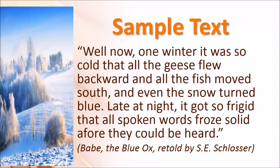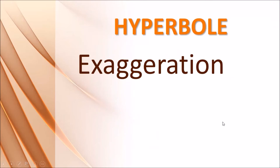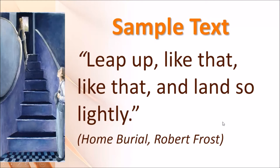Next example from 'Babe the Blue Ox' as retold by S.E. Schlosser: 'Well, one winter it was so cold that all the geese flew backward and all the fish moved south, and even the snow turned blue. Late at night it got so frigid that all spoken words froze solid before they could be heard.' All the phrases here are exaggerations, which makes this an example of hyperbole.